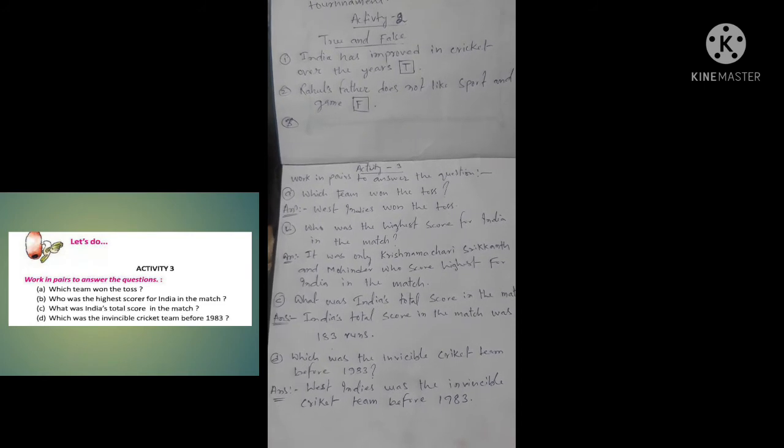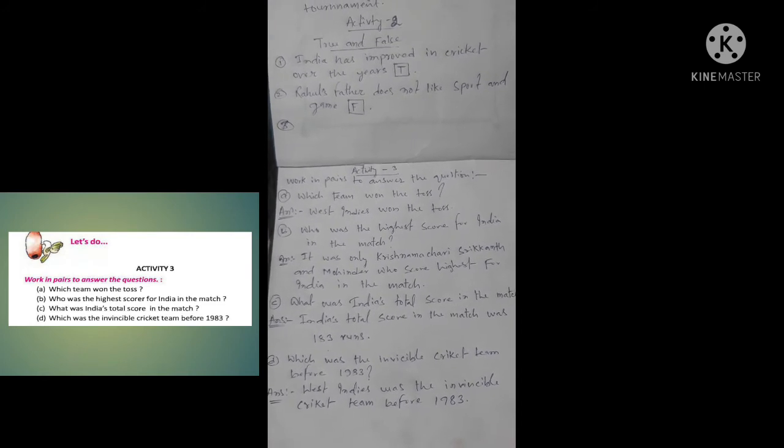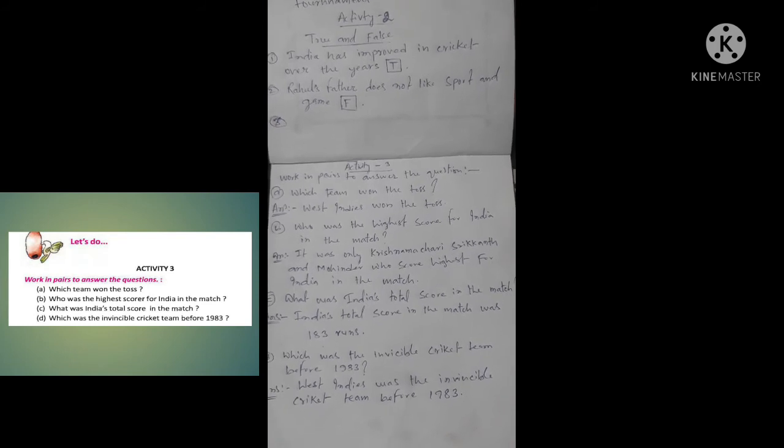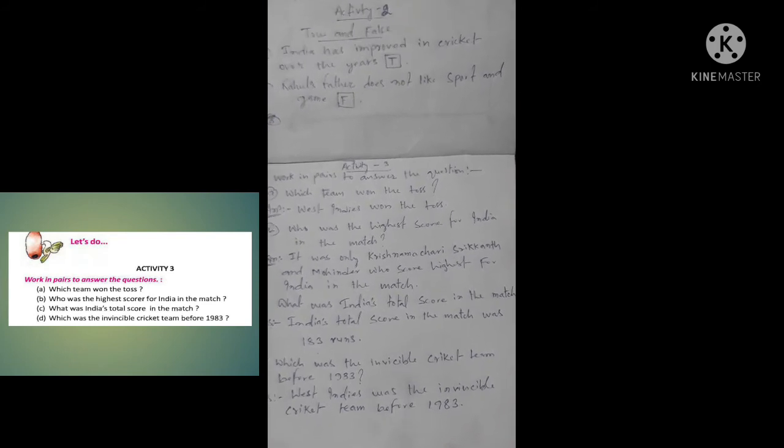D: Which was the invincible cricket team before 1983? Answer: West Indies was the invincible cricket team before 1983.